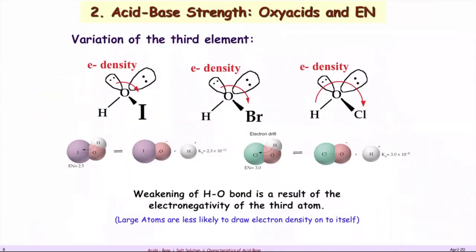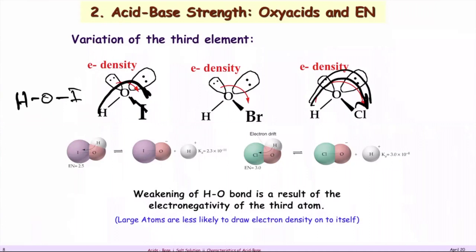This shows that HOI has iodine drawing the electron cloud away, but chlorine — being more electronegative — draws a greater amount of the electron cloud, weakening the O-H bond to a greater extent.